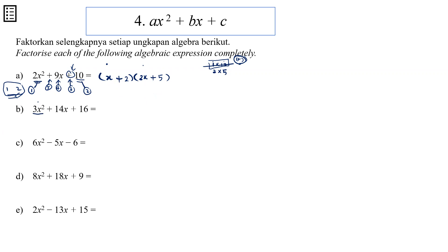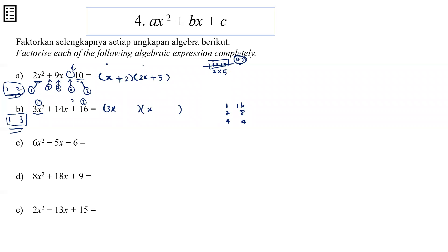Next: 3x² plus 14x plus 16. The x² is always x times x — the only thing is the coefficient 3. How do I get 3x²? It's 1 and 3, so only one pair of factors — we can just fix the position. Now look at 16: what are the factors of 16? We have 1×16, 2×8, and 4×4. We have to combine these with our factors from the x² term, then add the results to check against 14.